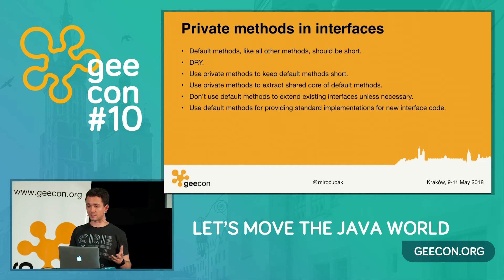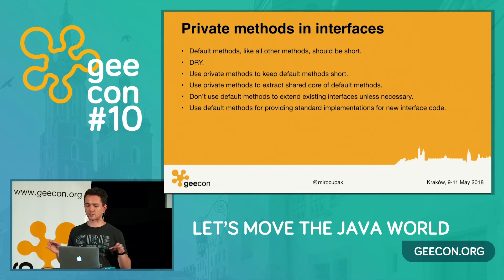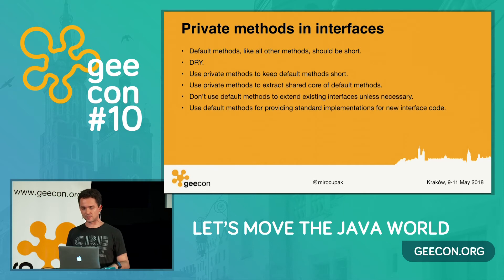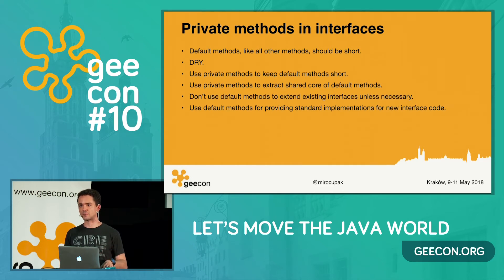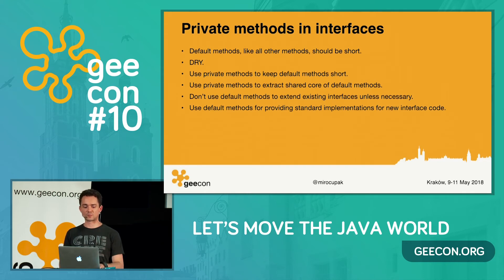To recap: default methods, like all other methods, should be short. If you have a long default method, extract functionality to separate private methods. Don't repeat yourself — if multiple methods share the same functionality, use private methods. Also, be careful using default methods when changing an existing API: even though you're not breaking backwards compatibility, you might break something, because you can't know all the invariants that implementors might be relying on.